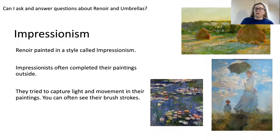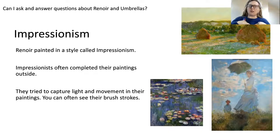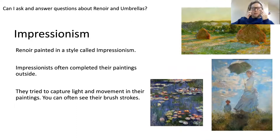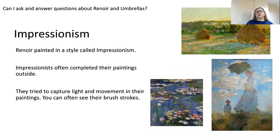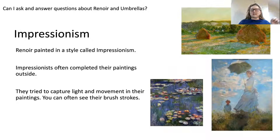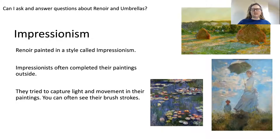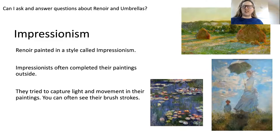Now, this is a very long word, but we're going to do my turn, your turn. Impressionism. Impressionism. Fantastic. Now, Impressionism is a style of painting — it's how the artist paints. Impressionists, who are the people who do this style of painting, they often do their paintings outside. The idea is that they try to capture the light and the movement that they see in their paintings. You can also often see their brush strokes if you look closely at the paintings — that's kind of part of what tells us what Impressionism is.